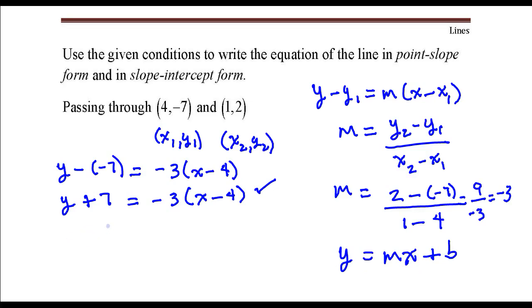And we can start off by subtracting 7 from both sides so that we solve for y. So if I subtract 7 from both sides, I have y is equal to negative 3 times x minus 4, minus 7.